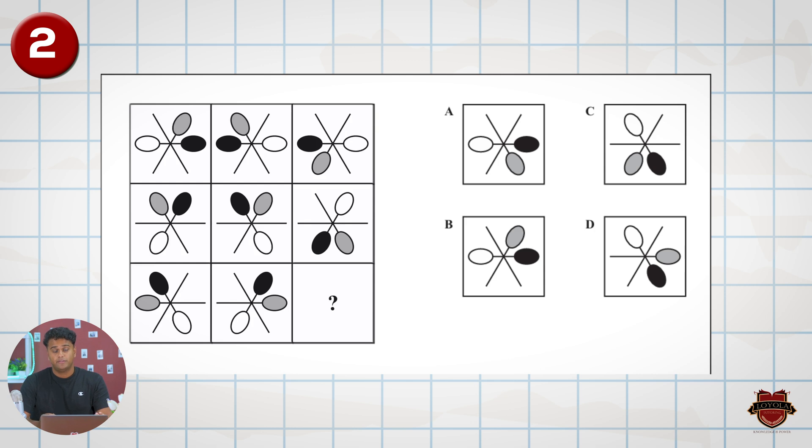In question number two we have three features: the black color here, the gray color, and the white. Now it is another complete the pattern question or find the missing box question.